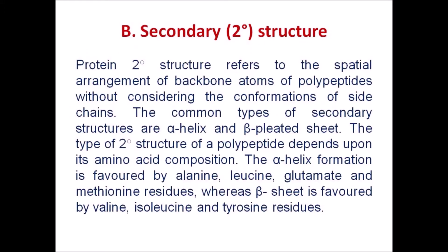Protein secondary structure refers to the spatial arrangement of backbone atoms of polypeptides without considering the conformations of side chains. The common types are alpha helix and beta pleated sheet. Alpha helix formation is favored by alanine, leucine, glutamate, and methionine residues, whereas beta sheet is favored by valine, isoleucine, and tyrosine residues.